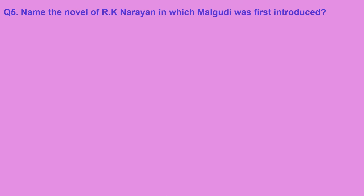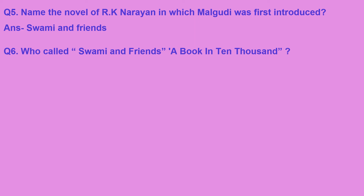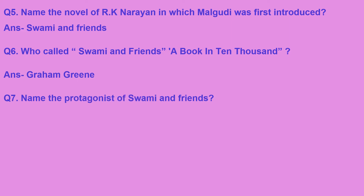Next question: name the novel of RK Narayan in which Malgudi was first introduced. Malgudi is a fictional town mostly used by RK Narayan in his works. It was first introduced in his novel Swami and Friends, published in 1935. Who called Swami and Friends 'a book in ten thousand'? Graham Greene, who was the mentor and friend of RK Narayan, called it 'a book in ten thousand.'